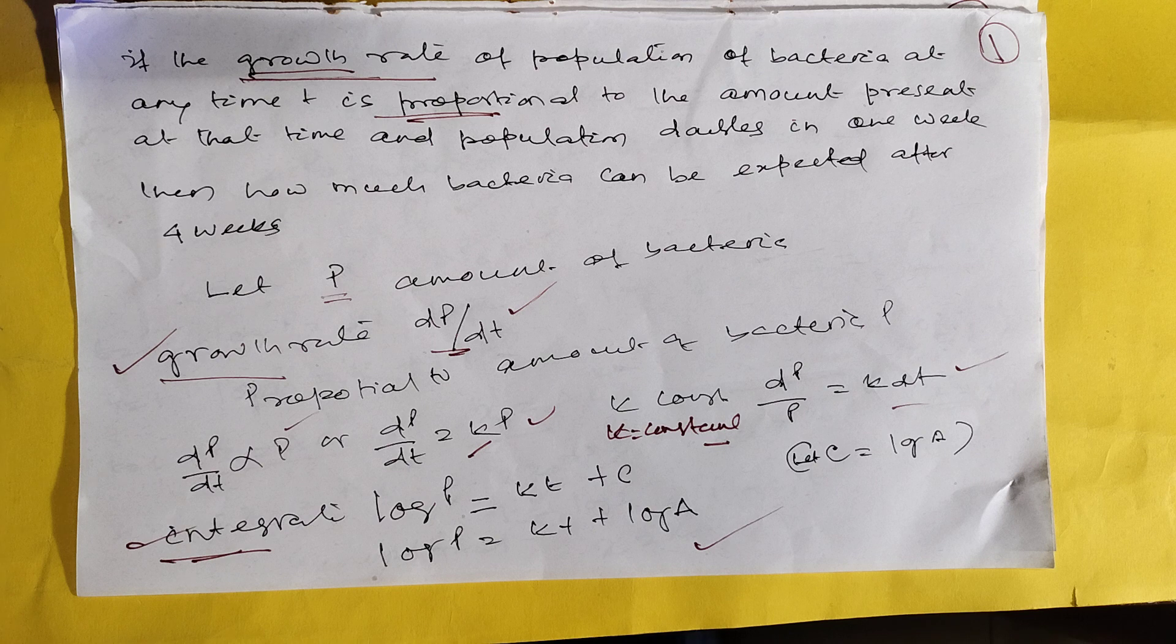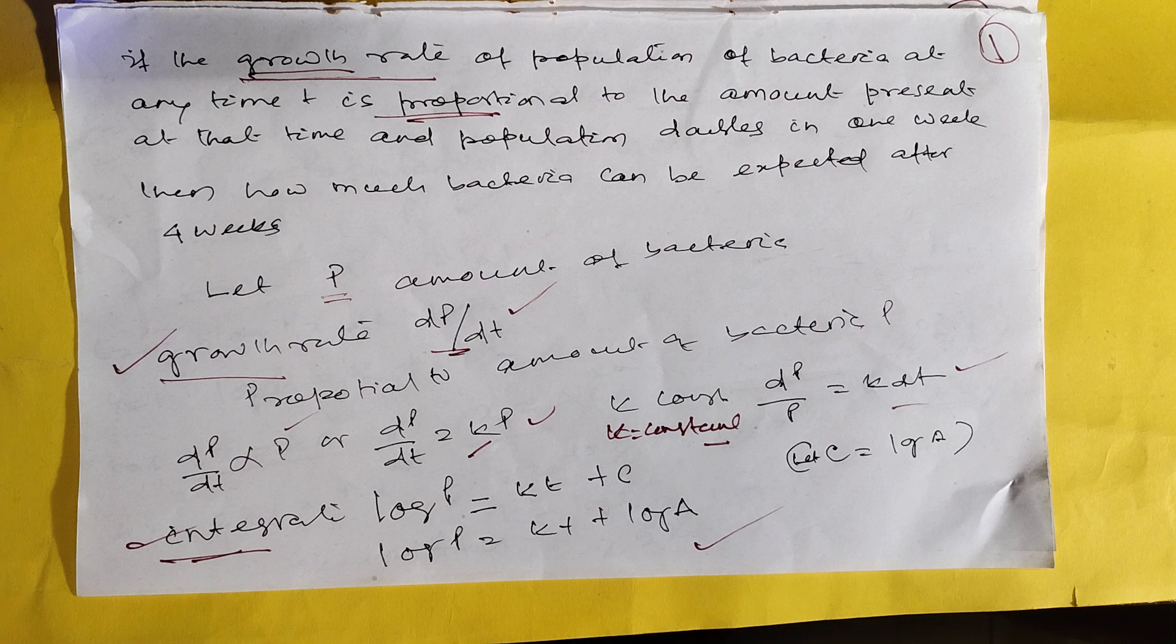If the growth rate of a population of bacteria at any time is proportional to amount present at that time, and population doubles in one week, what is the population after four weeks?